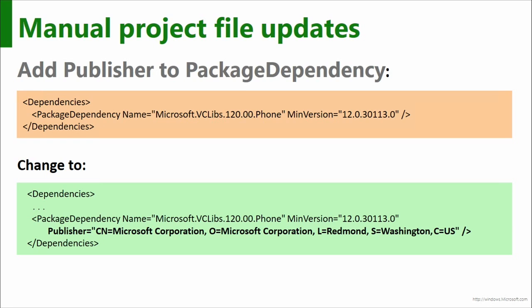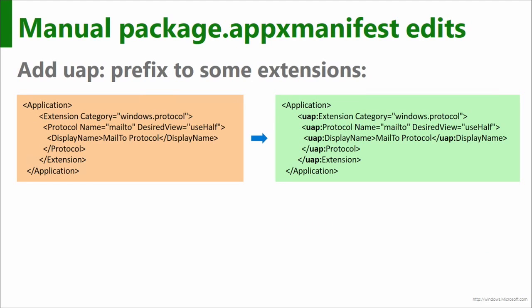That manifest entry is a clue — there is an API to specify the minimum width in code now rather than in the manifest. The tool does most of what you need but you might still need to make some changes. If you have package dependencies in your manifest, you have to add all the publisher information for the dependencies manually. You also need to add the UAP namespace — it's still UAP in Visual Studio despite the move to UWP branding.